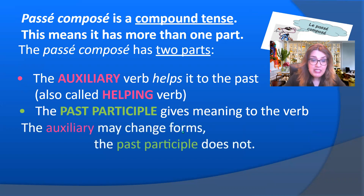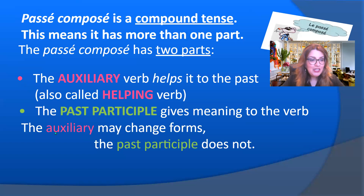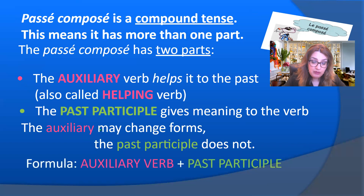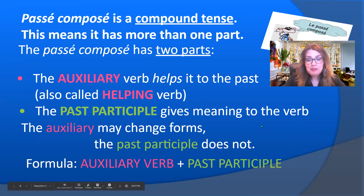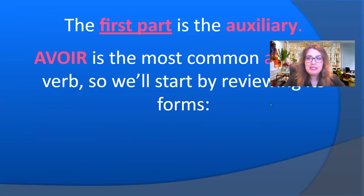The auxiliary may change forms, but the past participle does not. We may choose different forms or different verbs for the auxiliary or helping verb, but the past participle has a rule to form it and does not change. Here is the formula: auxiliary verb plus past participle — le verbe auxiliaire plus participe passé.